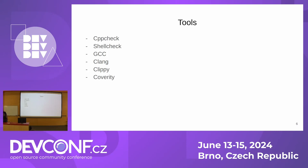The idea is not new. Some of you may be using this with your projects. Some of the tools listed here are static analysis tools: CppCheck, ShellCheck, GCC, Clang, and Clippy — which is the tool for Rust. And then there's Coverity, the best of them all, and also proprietary.